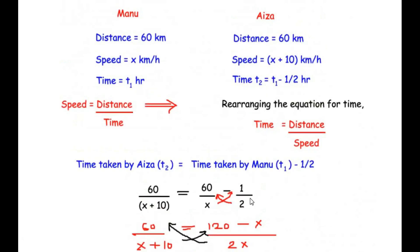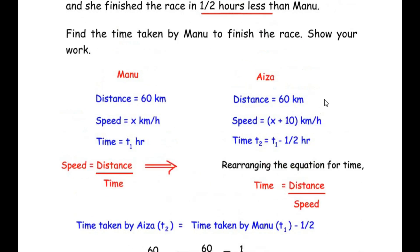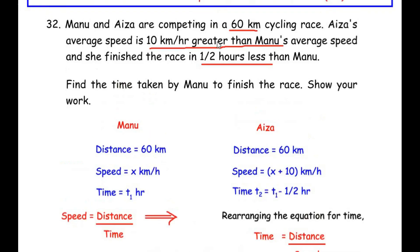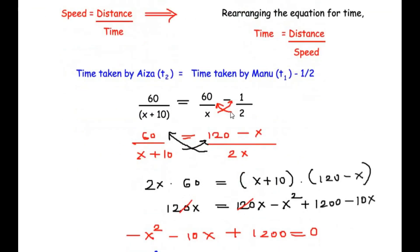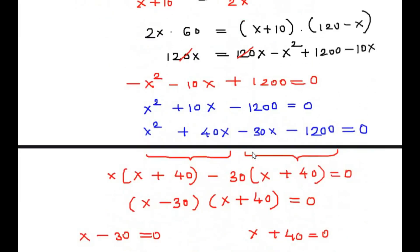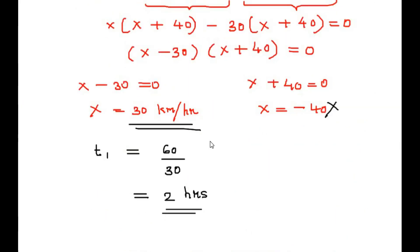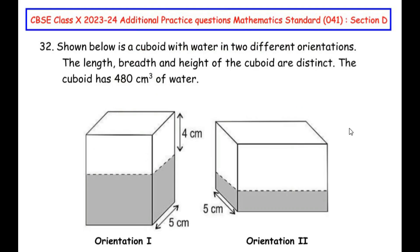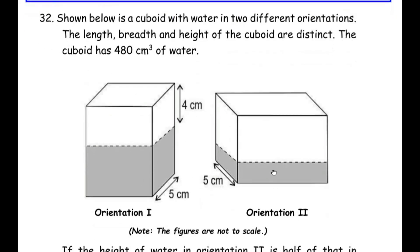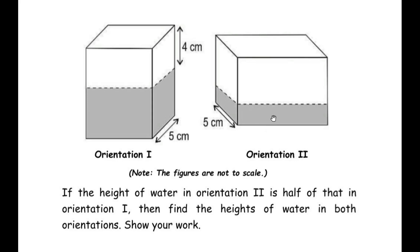So Manu finished the race in 2 hours and Aiza completed it in 1.5 hours, which is half an hour less than Manu. To solve this we used the distance-speed-time formula, formed a relationship between Aiza's time and Manu's time, and solved by cross multiplication and algebra. Now let us move on to the OR question, which is also from the quadratic equations chapter: a cuboid with water in two different orientations.